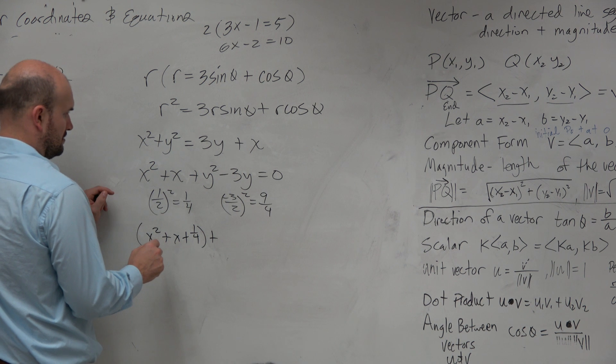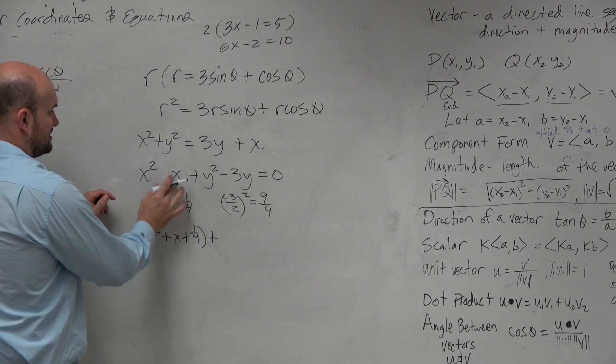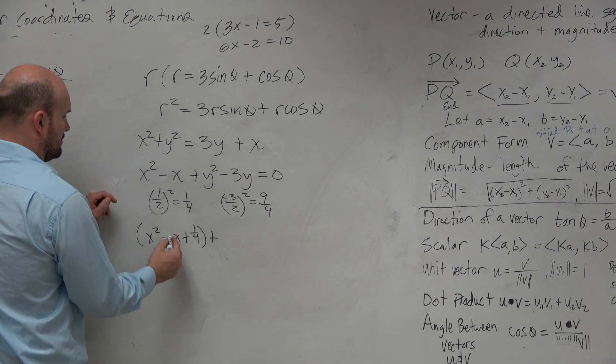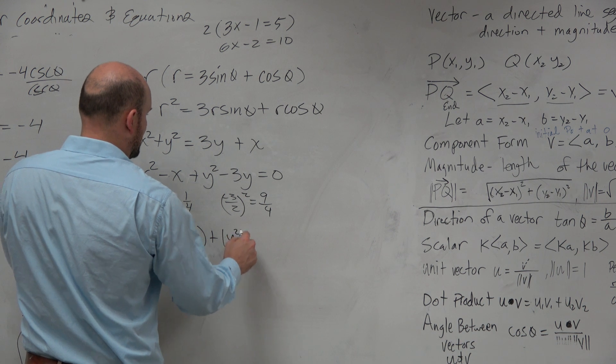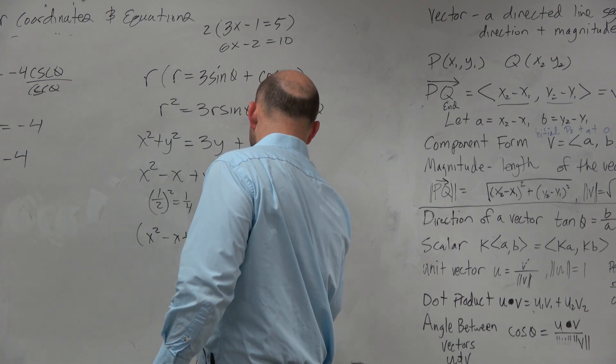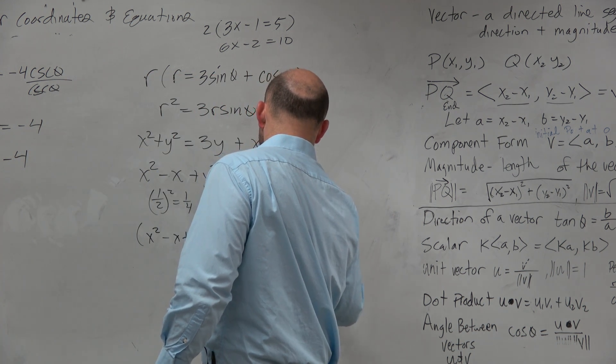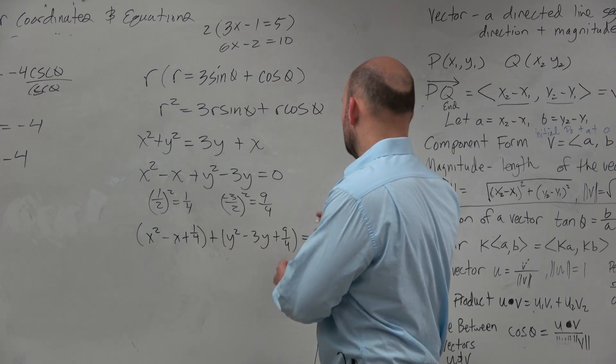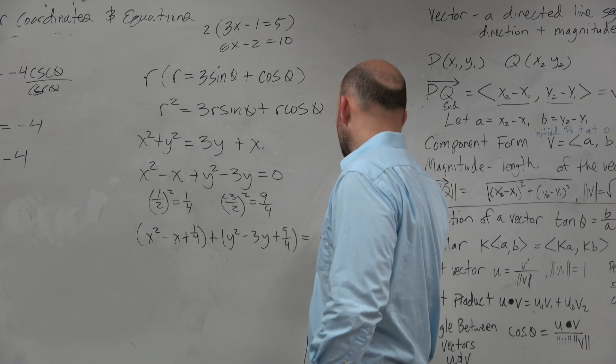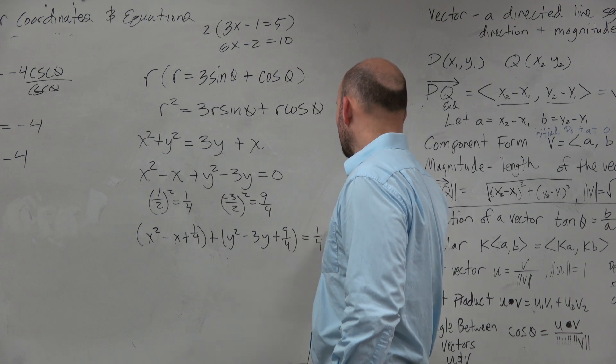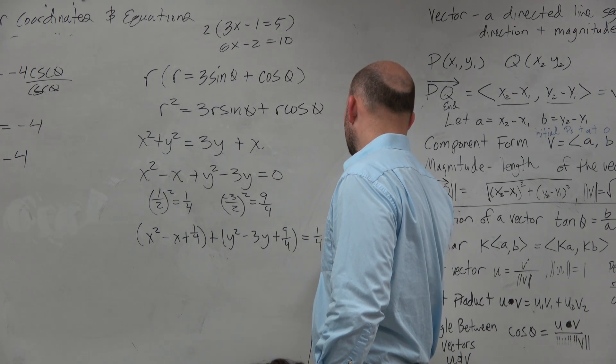Minus x. Oh, yeah, it is minus x. Thank you. And then this would be y squared minus 3y plus 9 fourths. But remember, guys, whatever you do to one side, you have to do to the other side. So if I'm going to add 1 fourth here, I need to add 1 fourth over here. That means I add 9 fourths over here.